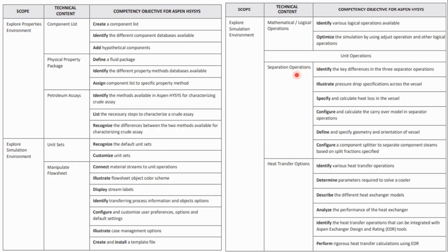Coming to separation equipment, which is a very important part: identify the key differences in three-phase separator operation, differentiate between two-phase and three-phase separators. There was a particular MCQ related to this. You should know how to define pressure drop across a vessel, calculate heat loss in a vessel, and calculate the carryover model in separator operation. You should also be able to define specified geometry and orientation of a vessel, and configure a component splitter to separate component streams based on split fraction — this was part of the lab work.